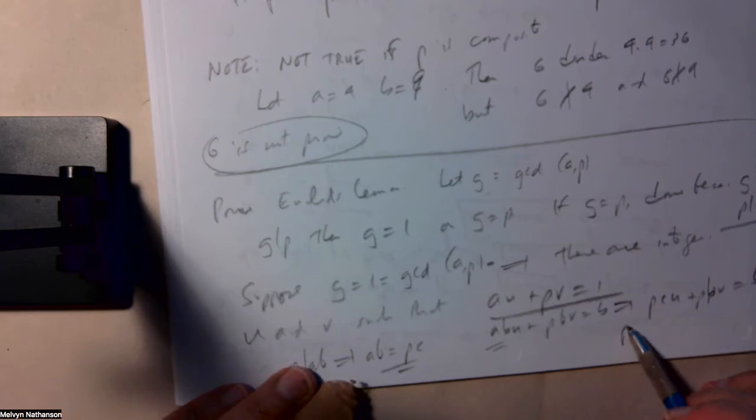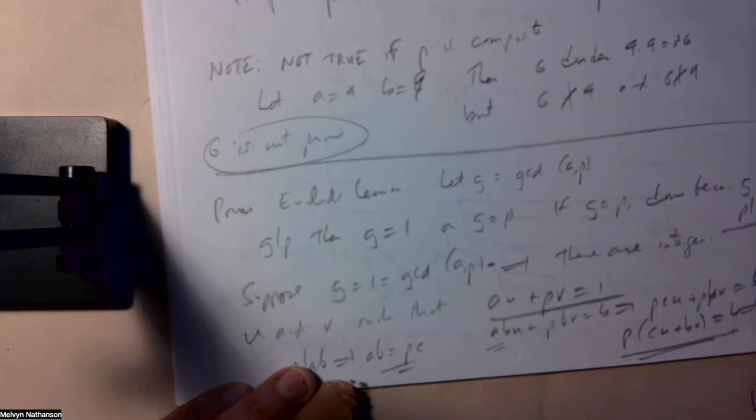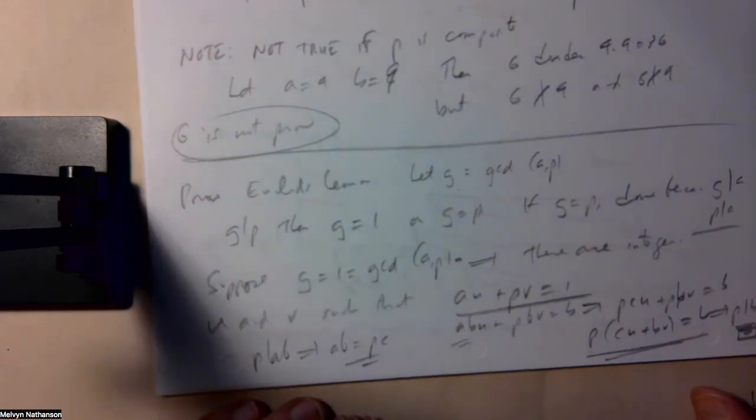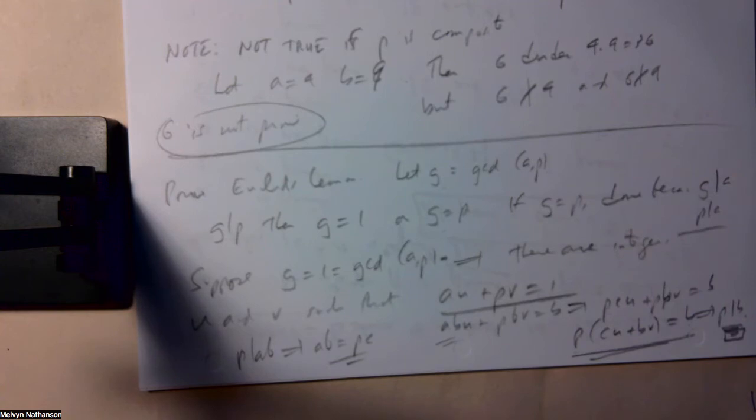If I factor out the p, I see that p times cu plus bv equals b. In other words, p divides b. b is p times something. So we're done. That's the proof. And it only takes a paragraph here and in the book. But you need to spend a lot of time studying this proof.